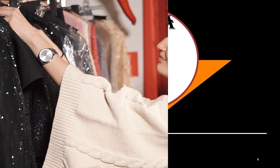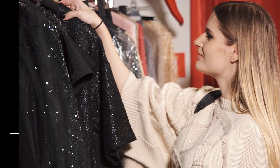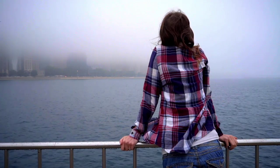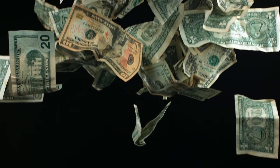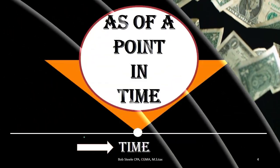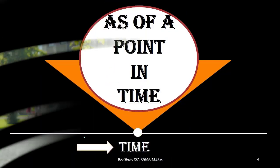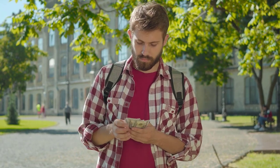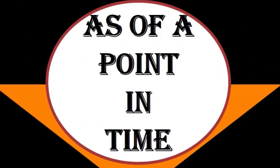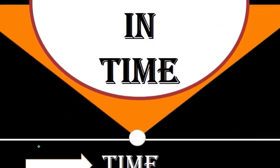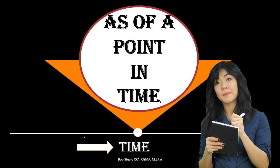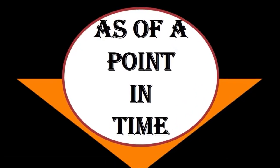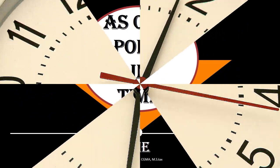When considering this concept of the balance sheet representing a point in time, think about cash. If asked how much cash someone has at this point in time, they could check their pockets and tell you. Unlike income statement accounts like revenue and expenses — asking how much revenue you earn is an action statement that requires a time frame with a beginning and an end, not just a point in time.